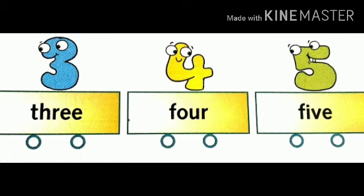Here we can see number 3, number 4, and number 5. Which number is lying before number 4? Number 3 is lying before number 4. Next, which number is lying before number 5? Before number 5 is lying number 4.